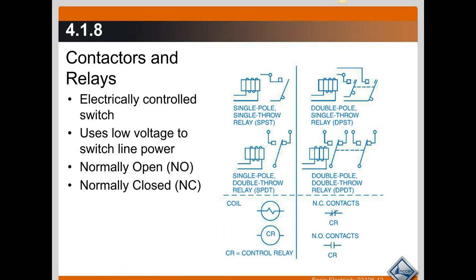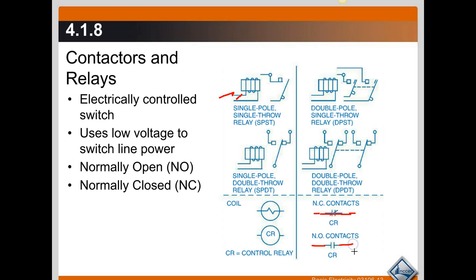The contacts: normally closed contacts mean that when the coil is not energized, the contacts between here and here are closed — that's a straight line. The normally open contacts, when the coil is not energized, are open. The wires come in, it's broken, there's no connection on the other side. That contact is open.